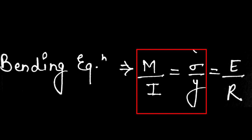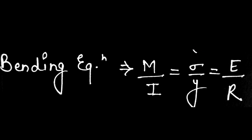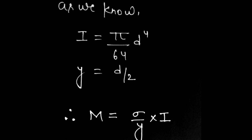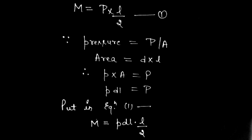First of all, we will find M — the bending moment. We know I = πD⁴/64 and Y = D/2, which is the half diameter. For M, using the cantilever bending moment formula, M equals load times distance. Here the load is P and the distance is L/2, because the load is applied at the middle of the pin.